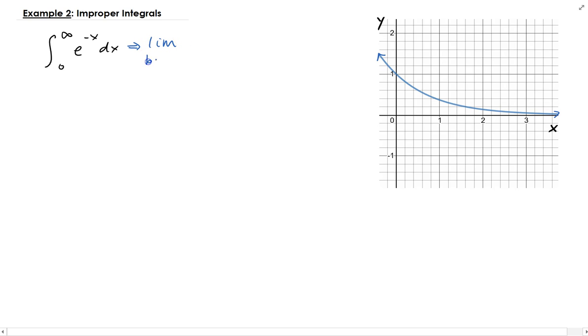We get the limit as b goes to infinity from zero to b of e to the minus x dx. Now we're going to take the integral and then take the limit of that.